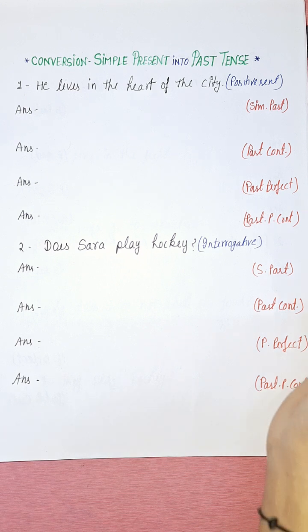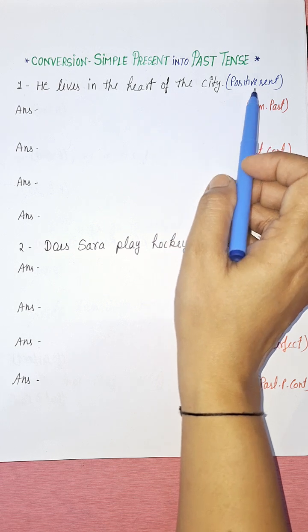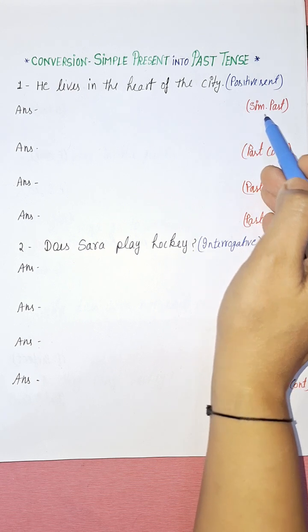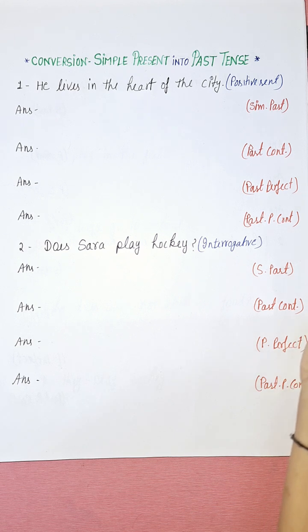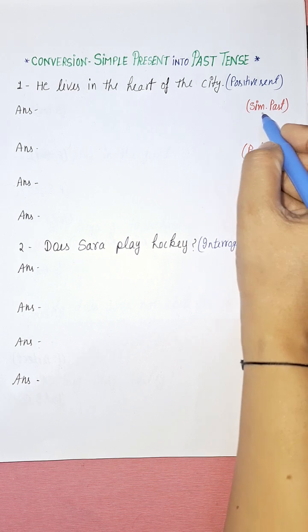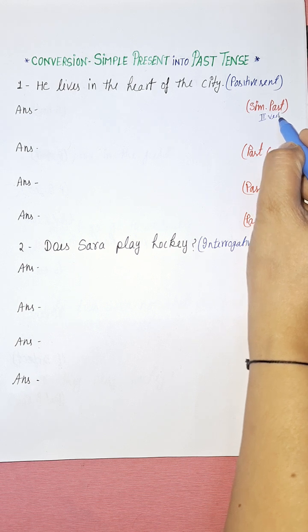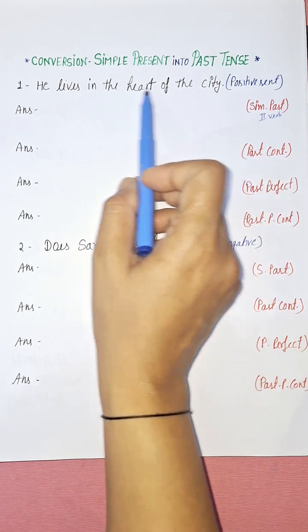Let's start. The sentence is: 'He lives in the heart of the city.' It's a positive sentence in simple present. Now we have to convert this into simple past tense. The helping verb of simple past tense is 'did', and we also use the second form of the verb as the main verb.